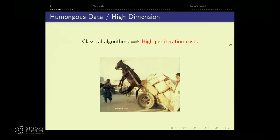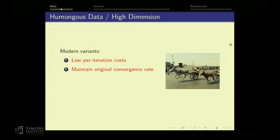In the presence of humongous data, the optimization literature goes back decades and centuries, and you have many options — but most of those options don't fit this regime because they have very high per-iteration costs. The modifications people have been trying to make over recent years is to turn classical algorithms to be more efficient by doing two things: making every iteration cheaper while trying to maintain the original convergence properties.